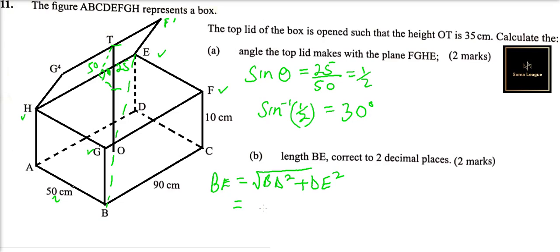But we can say BD is the square root of BC squared plus CD squared. So we can say BE equals the square root of BC squared plus CD squared plus DE squared. With this, which we have the values, we can be able to get BE.